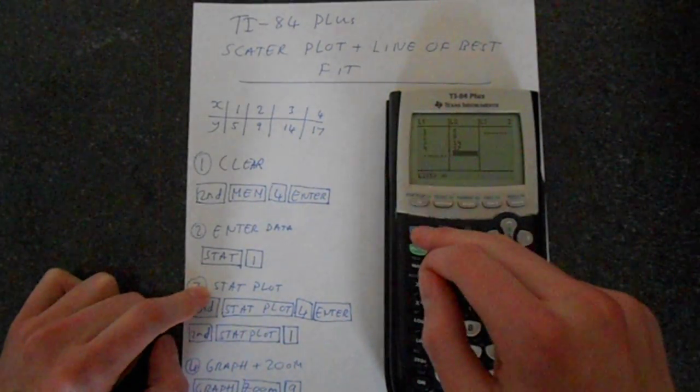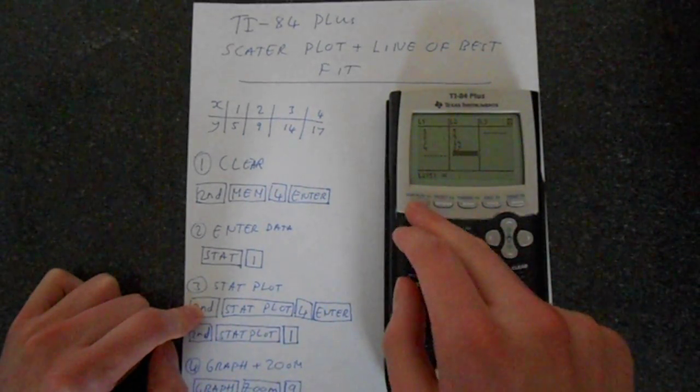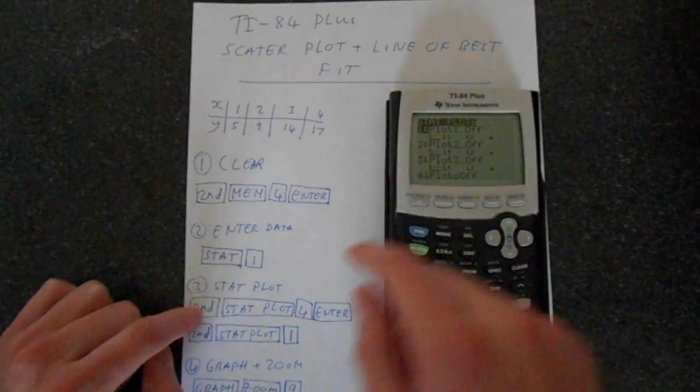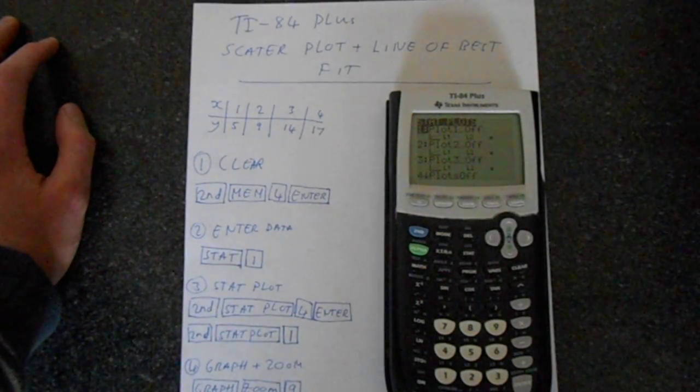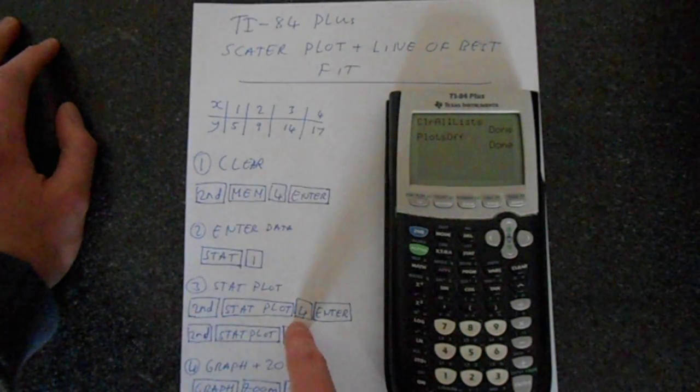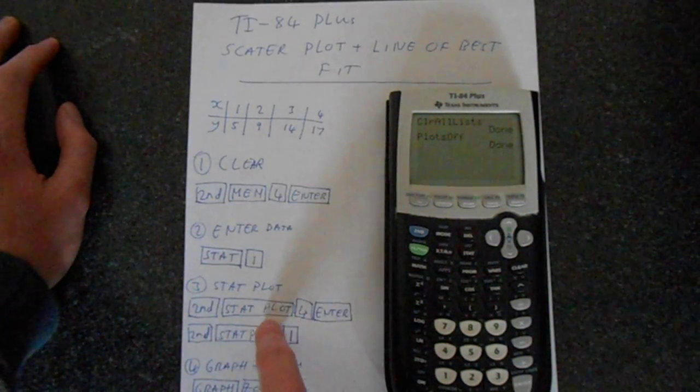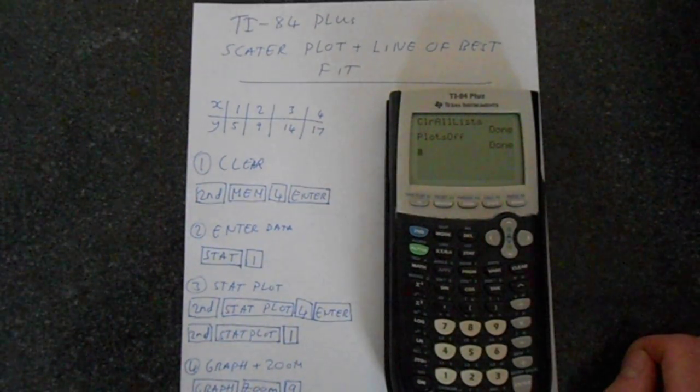So if we go to second function, then stat plot, which is in the top line here on the y equals. We want to make sure that the plot, maybe a previous plot we've done, will clear that. So if we go to 4 and then enter, that clears the plots that are there, if any.